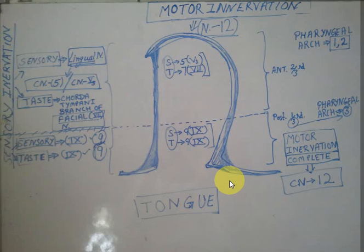Motor innervation is nerve 12 — don't worry about anything else. For sensory innervation, in the anterior two-thirds, the somatic innervation is from the lingual nerve, which is ultimately a branch of the trigeminal nerve — the mandibular branch of cranial nerve 5. The taste sensation is from the facial nerve, specifically the chorda tympani branch of nerve 7. Broadly: nerve 5 for somatic, nerve 7 for taste, in the anterior two-thirds.